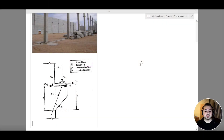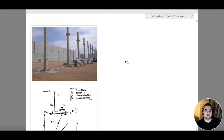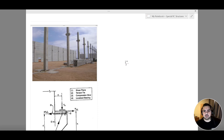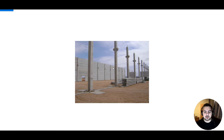Hello everyone and welcome to the first lecture of this course, where we will be discussing different types of special reinforced concrete structures, which are my corbels or brackets and my beam ledges. First, we're going to start with the design of my corbel as our first example, then we will move to our beam ledges.